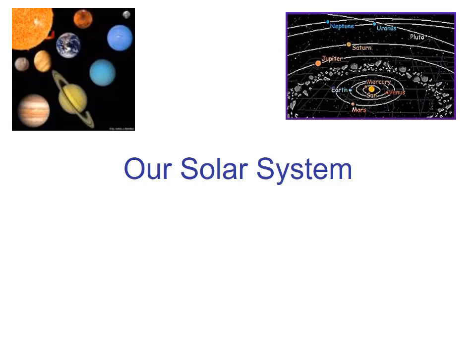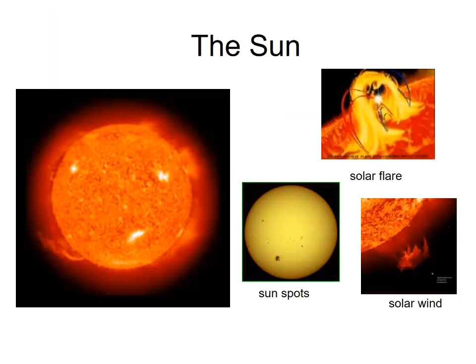Our solar system — here we have to know which types of planets and satellites belong to our solar system. The greatest entity is the Sun. The Sun is the center of our solar system, and here we can see a picture.